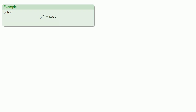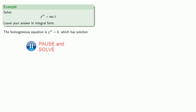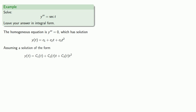For example, say we want to solve the third derivative equal to secant of t. In general, the anti-differentiation process will require us to find the anti-derivatives of some very complicated functions, and it might not always be possible to find those anti-derivatives in a closed form. So let's leave our answer in integral form. We want to solve the homogeneous equation, so we'll make our non-y term zero. The homogeneous equation is the third derivative equal to zero, which has solution where c1, c2, and c3 are undetermined constants. So we'll assume a solution of the form where c1, c2, and c3 are undetermined functions of t.